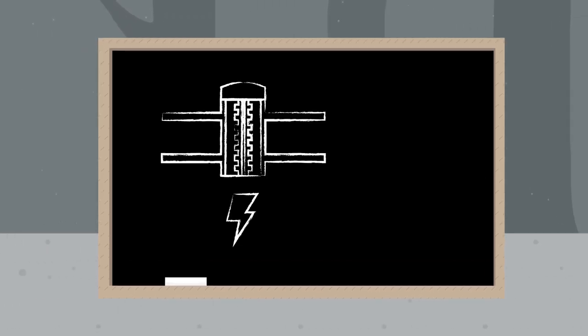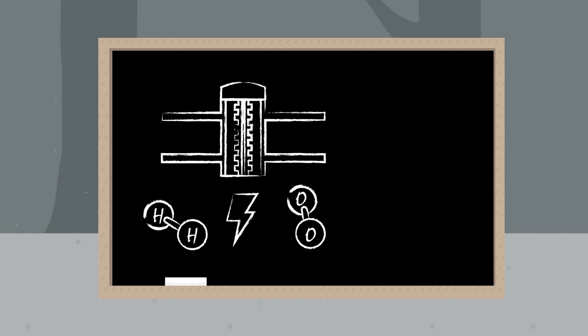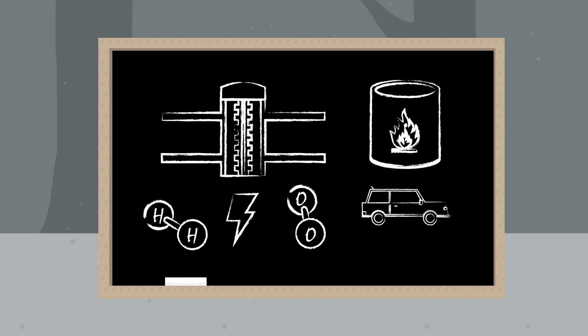So to summarize, fuel cells generate electricity from the reaction between a fuel and oxygen. Using them on vehicles means that we need to develop a way of storing hydrogen which is difficult, so vehicles of the future are more likely to be powered by batteries.